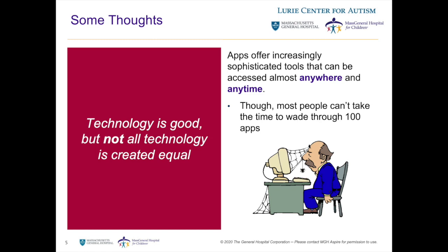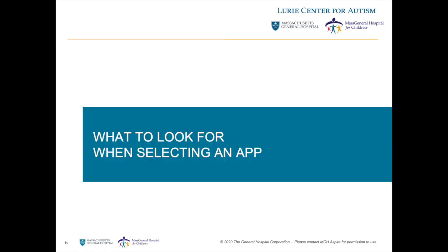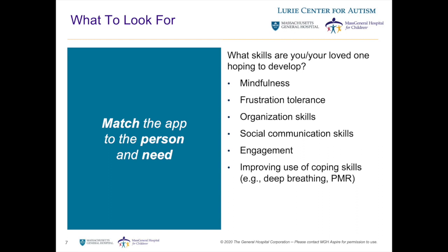Apps are becoming more and more sophisticated, giving access almost anywhere at any time, though there are thousands of apps out there purporting to do so many things, and most of us don't have the time to go through all of them. Because not all technology is created equal, we want to briefly discuss what to look for when selecting an app. Most importantly, you want to match the app to the person. This includes first thinking about what skills your loved one is hoping to develop — do they want to increase their mindfulness, frustration tolerance, social engagement, or use of coping skills? These are a few examples of skills that apps can help address.